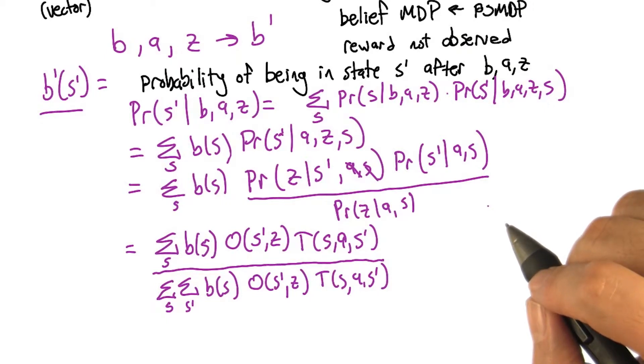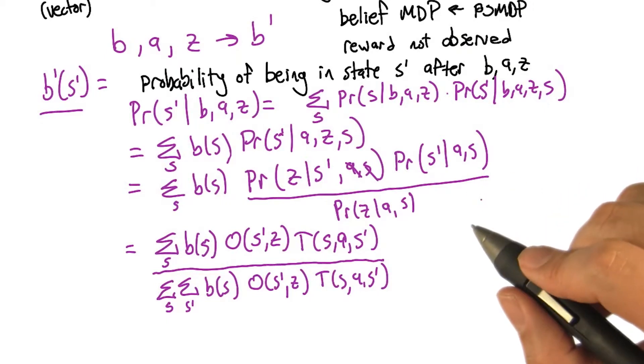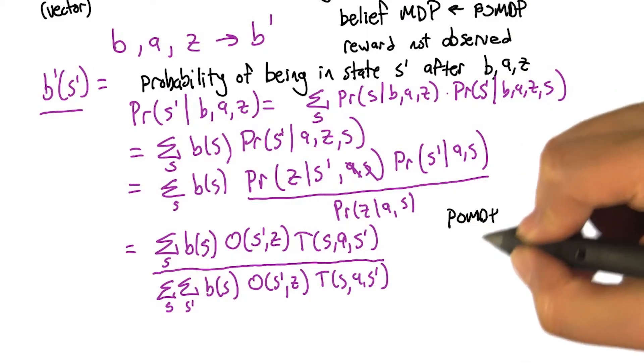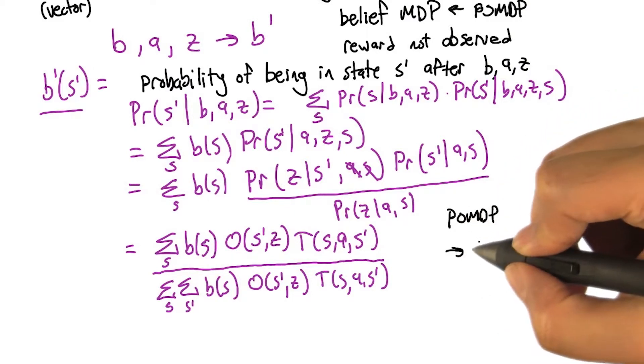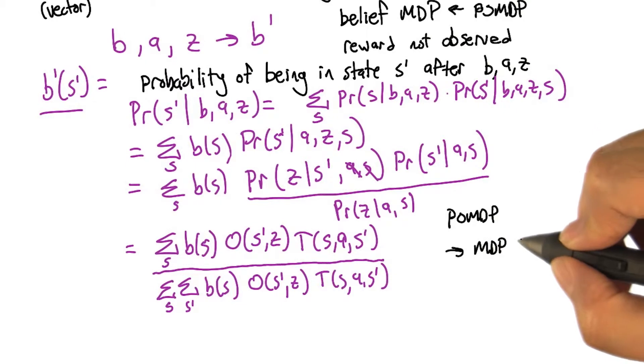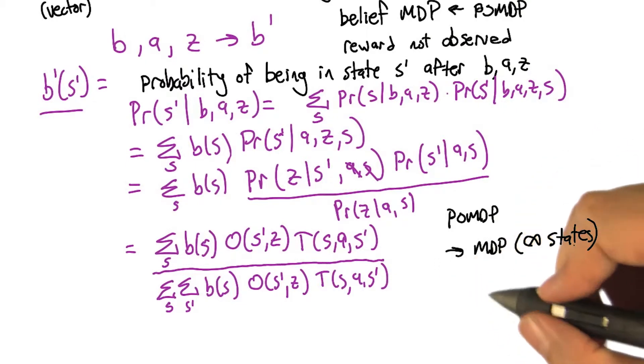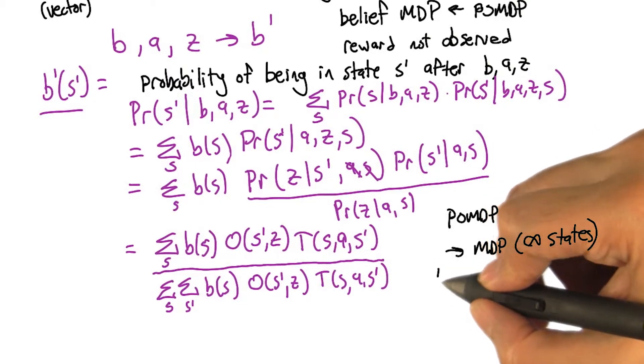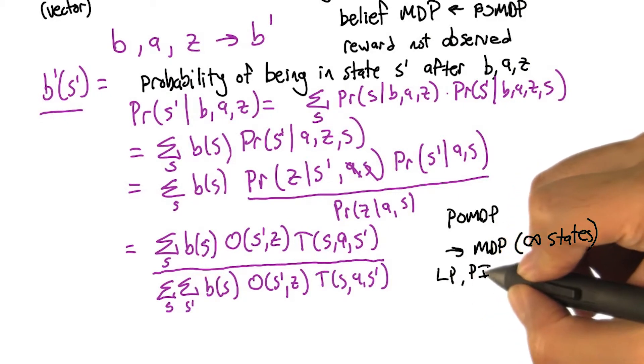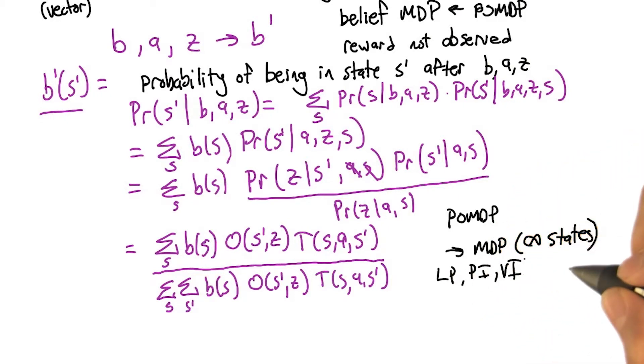So this doesn't actually tell us how to do decision making, because what we've done actually is we turned a POMDP into an MDP that, by the way, has an infinite number of states. So we have a number of algorithms that we can run, like linear programming, or policy iteration, or value iteration. And they all, at best, grow polynomial in the number of states. So it's polynomial in infinity. So infinity. So it's a constant. No. It's bigger than any constant. So this is problematic.